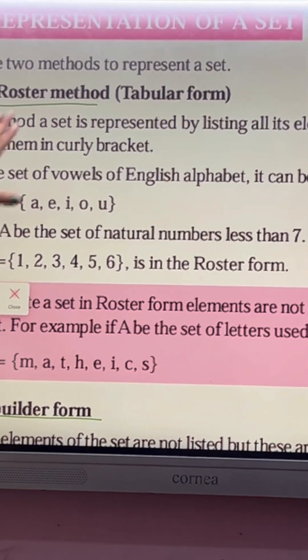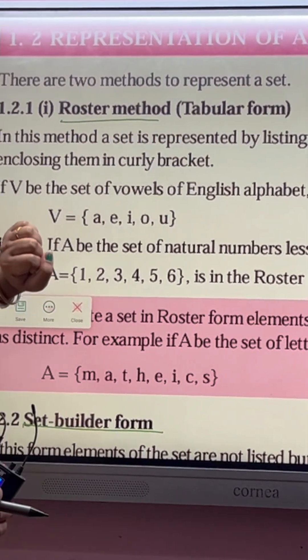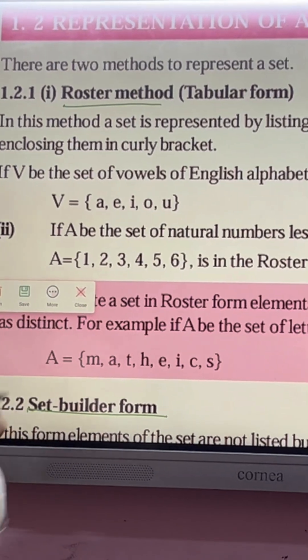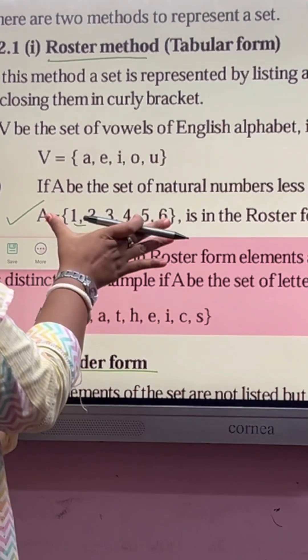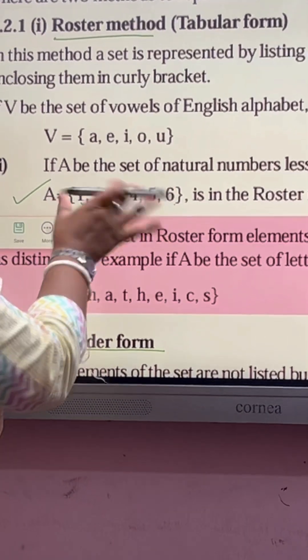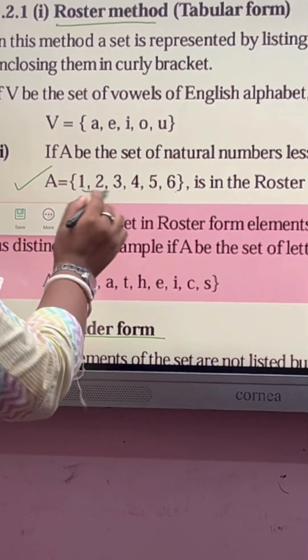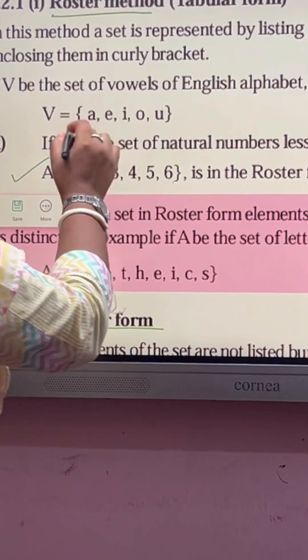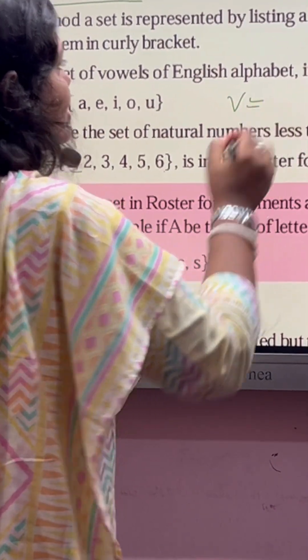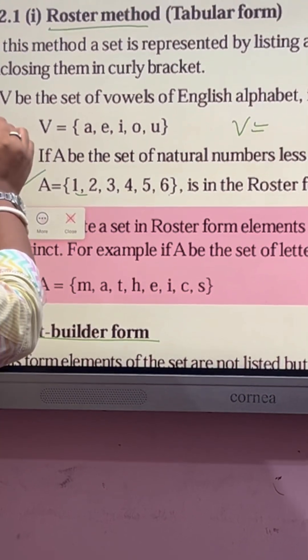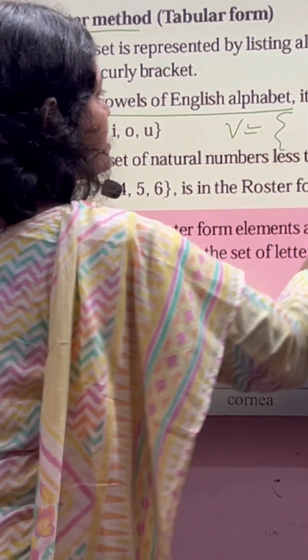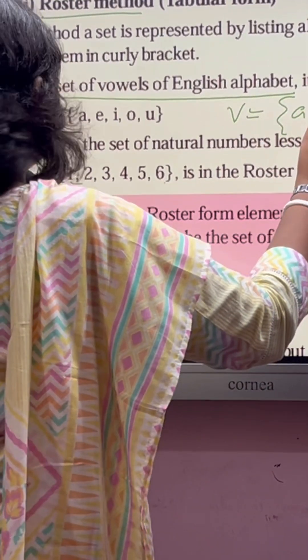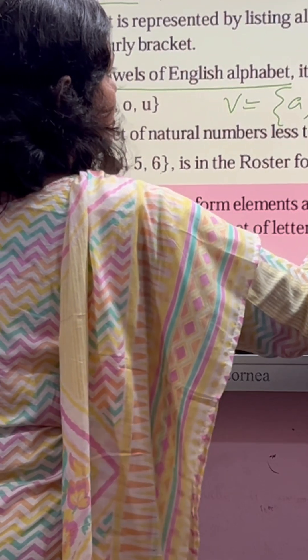See, in roster method, we have to write the collection in elements form. These are called elements of the set. And the collection can be written as, see, the collection of vowels of English alphabet.